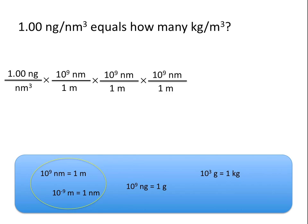We need to write this conversion factor one more time, so we have nanometers times nanometers times nanometers — or nanometers cubed — on the top, and nanometers cubed on the bottom. Writing the conversion factor three times allows us to cancel nanometers cubed on the bottom with nanometers cubed on the top. Note that we'll also be multiplying our initial value by 10 to the ninth three times, which is important to get the correct answer. If we stopped here, we'd have nanograms per meters cubed — successfully converting nanometers cubed to meters cubed.